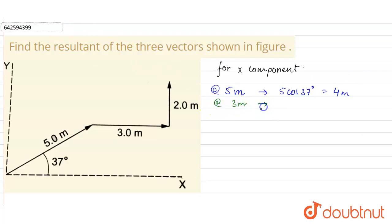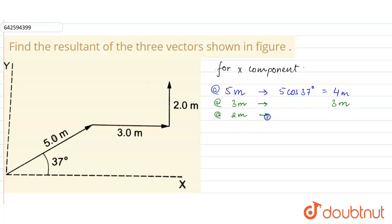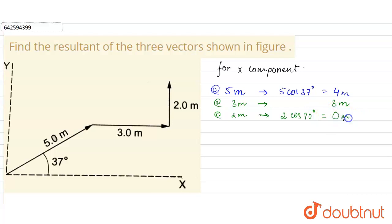For the 3-meter vector, the x-component is zero, as it is vertically upward — we can say it is making an angle of 90° with the horizontal. So the x-component is 3 cos 90°, and cos 90° is zero.